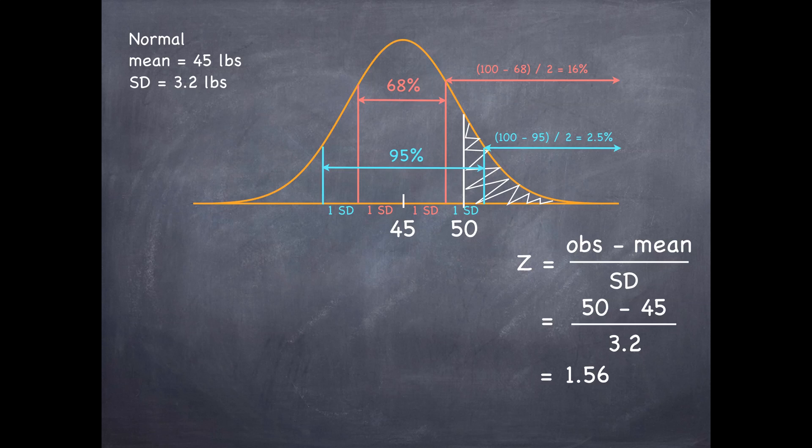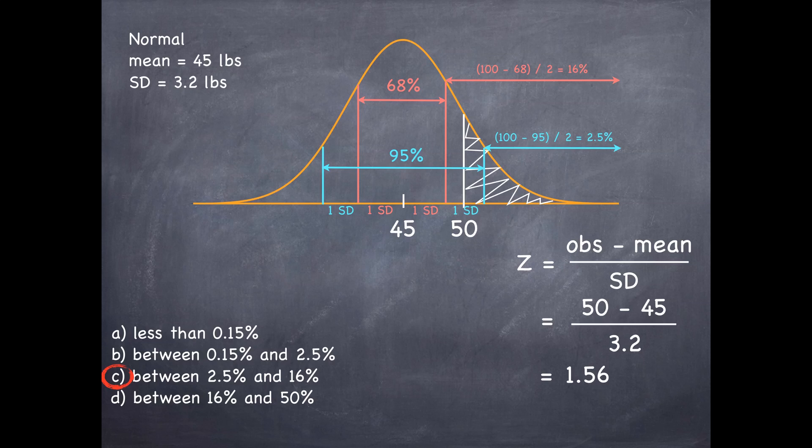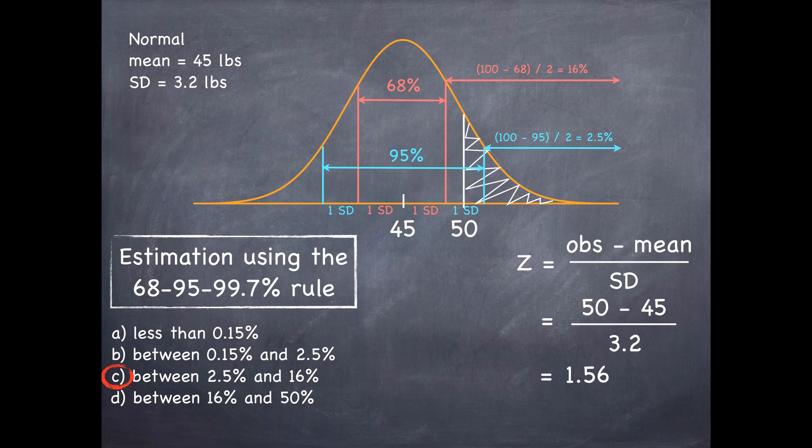2.5%. So the shaded white area is somewhere between 2.5 and 16%. Here we calculated this area, well we really estimated this area using the 68-95-99.7 rule.